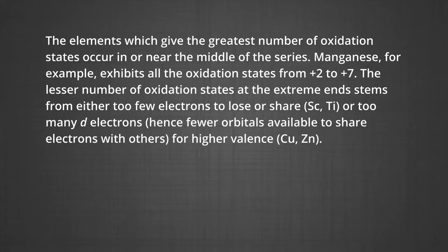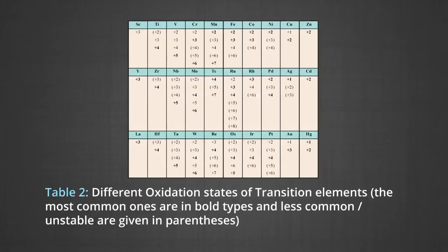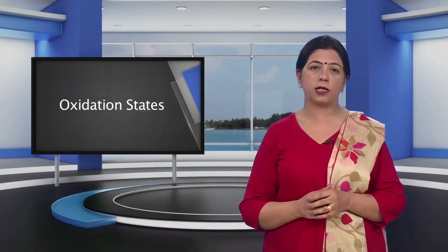Hence, fewer orbitals are available to share electrons with others for higher valency, as in copper and zinc. Early in the series, scandium in the +2 state is virtually unknown, and titanium in the +4 state is more stable than in +3 or +2. At the other end, the only oxidation state of zinc is +2, with no D electrons involved.